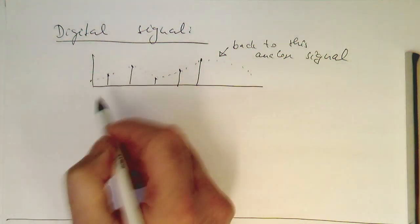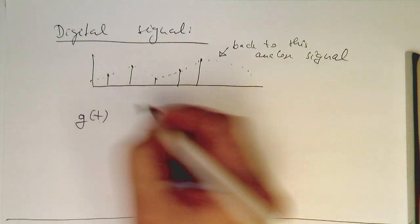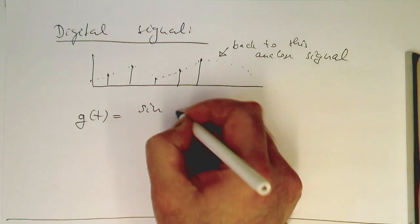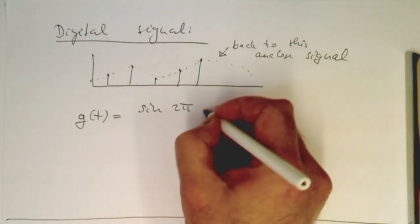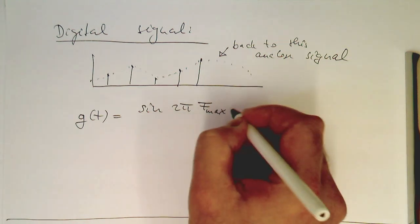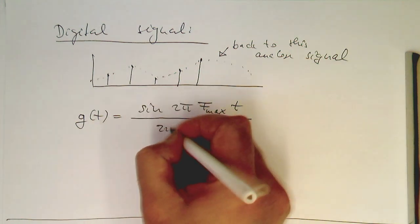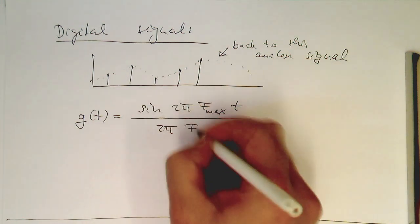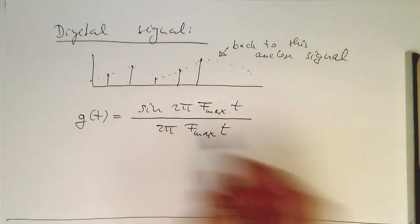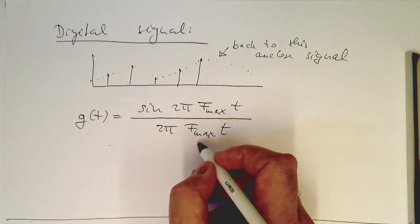So how do we do this? And the idea is the following. So we take a function, g of t, which looks like this. 2 pi, and then f, f max, t, divided by 2 pi, f max, t. So the idea is to take this function now here. So it's our maximum frequency as defined previously.